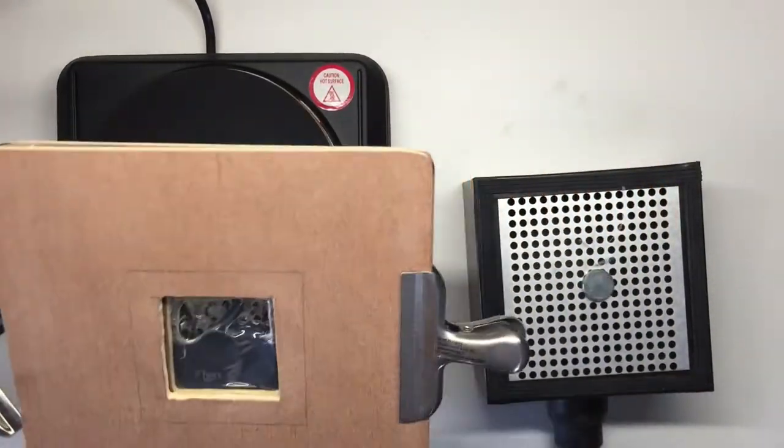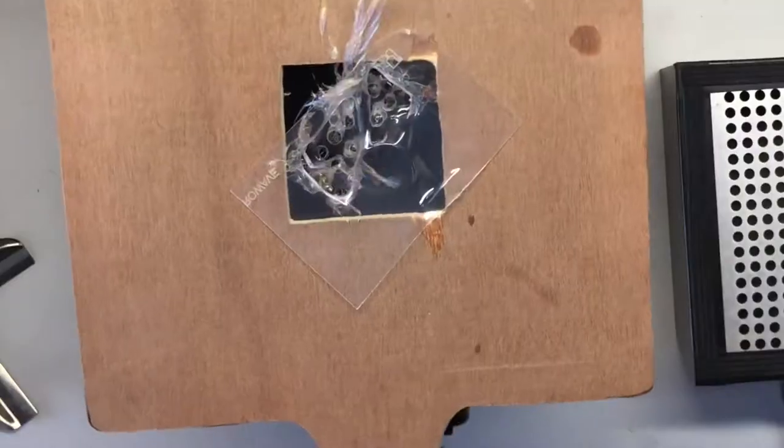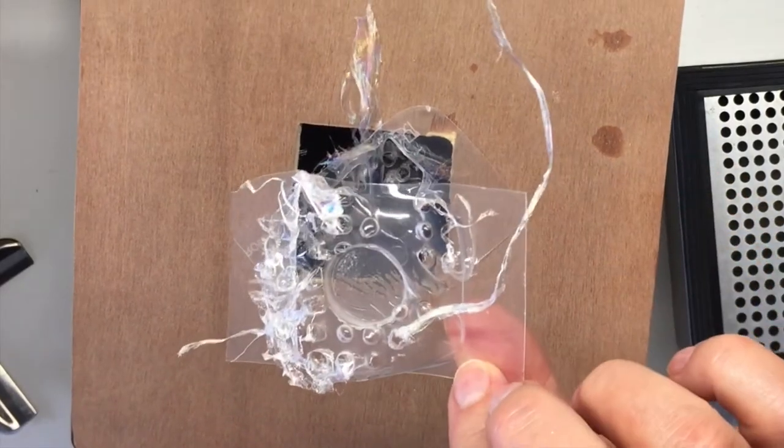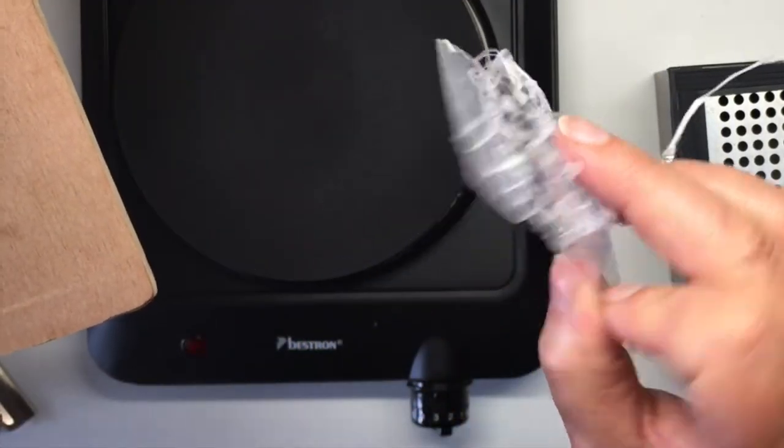As you can see, the polypropylene is not a huge success. Although it did show the shape of the object, it was not crisp and smooth as I expected. I will experiment a bit more with this material in the future.